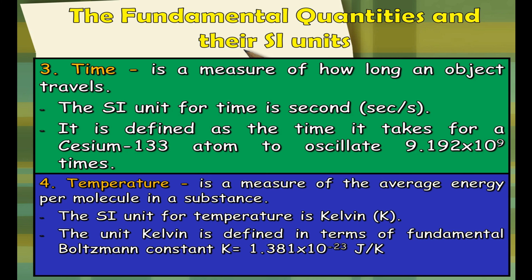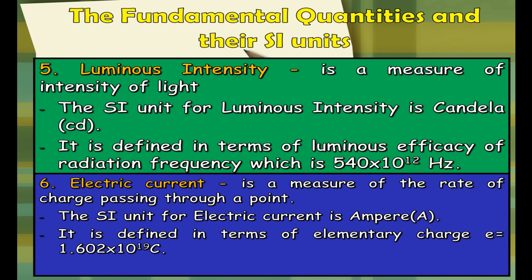The fifth and sixth SI units are luminous intensity and electric current, which you may be familiar with from Grade 10 science. Luminous intensity is a measure of the intensity of light; its SI unit is candela, defined in terms of luminous efficacy of radiation at frequency 540 times 10 raised to 12 Hz. Electric current is the measure of the rate of charge passing through a point; its SI unit is ampere or A, sometimes called amp. It is defined in terms of the elementary charge e, which is equal to 1.602 times 10 raised to 19 coulombs.